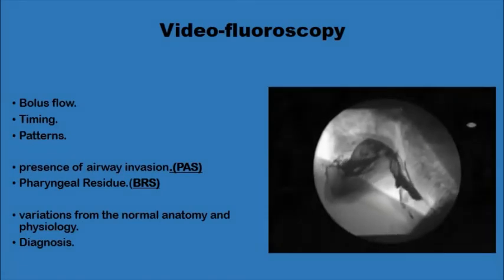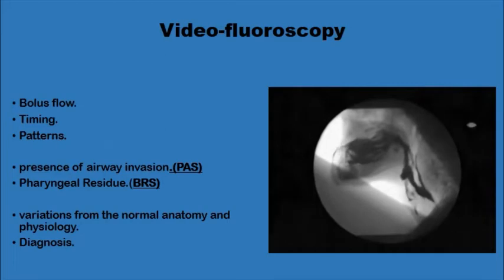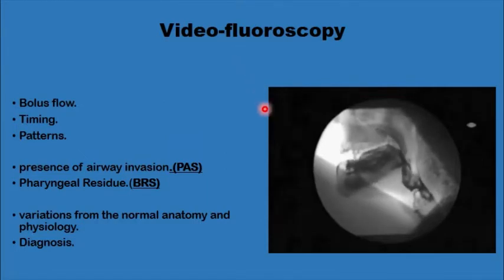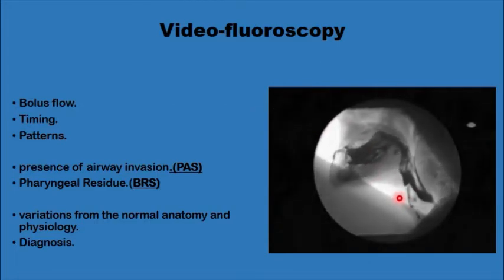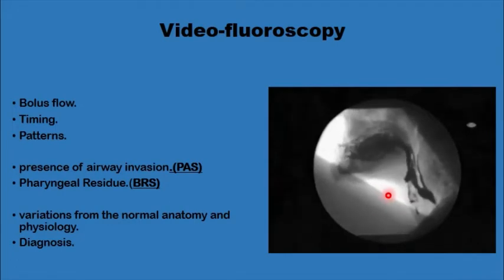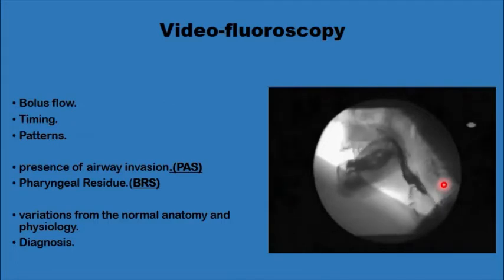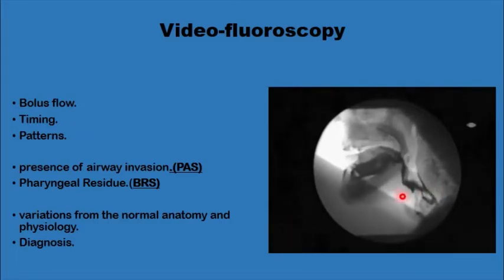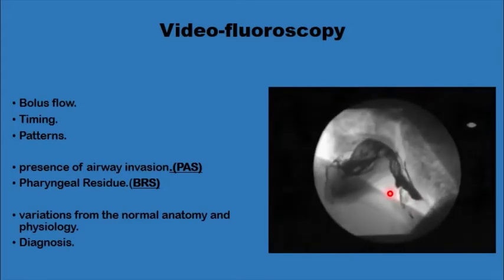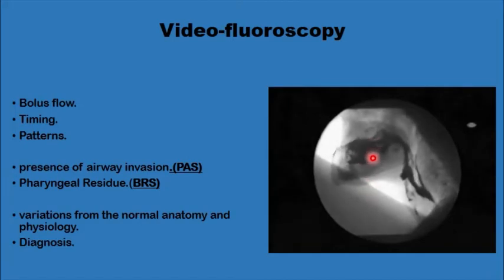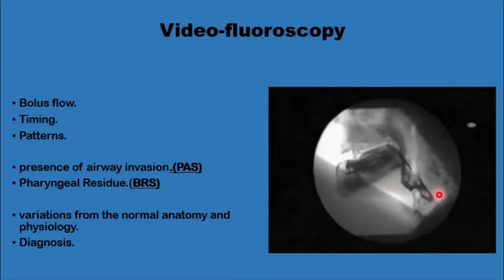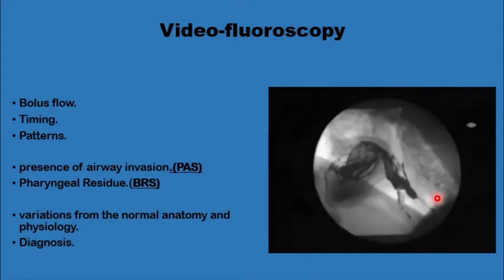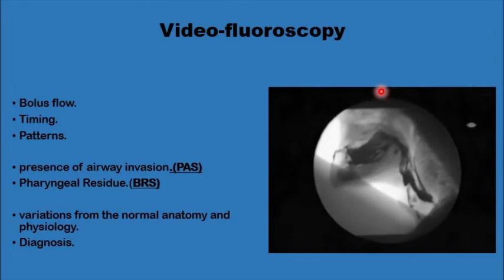The third essential investigation in cases of suspected cricopharyngeal dysfunction, alongside FEES and flexible endoscopy, is video fluoroscopy. This shows what happens to the pharyngeal bolus during swallowing — whether there is aspiration into the larynx and trachea, any holdup of the bolus above the cricopharyngeus, and how it actually opens. It also evaluates movements of the larynx and hyoid upwards and anteriorly, and any problems with the tongue base.